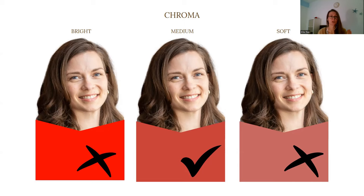The second level of analysis is to cross-check between the bright red and the medium red to determine the distance between the color and the person. Here it is quite a distance between the bright red and the person, and the bright red is also too much energy for her. It is not energizing her overall features or providing any type of harmony, which is why she is a medium chroma type.